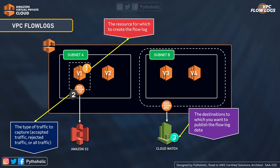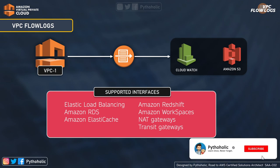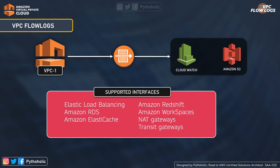Unfortunately, since nothing is attached to instance V2, it misses out on the logs. We can also create flow logs for interfaces created with Elastic Load Balancing, Amazon RDS, Amazon ElastiCache, Amazon Redshift, Amazon Workspaces, NAT Gateways, Transit Gateways, and many more. This gives us a lot of provisions to enable VPC flow logs and monitor these systems, and you can send them to CloudWatch or Amazon S3.